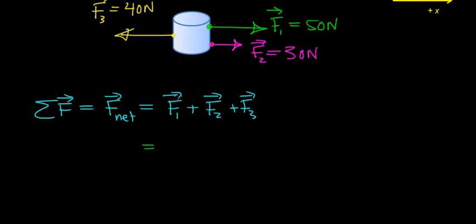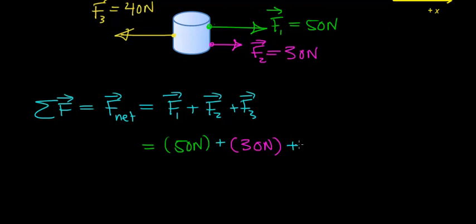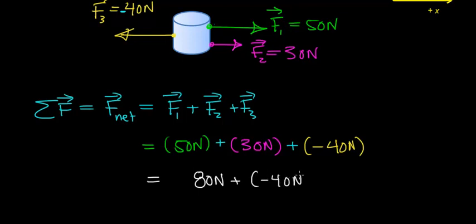We're going to add force 1, which has a magnitude of 50 Newtons in the positive x direction, plus F2 with a magnitude of 30 Newtons, plus F3 with a magnitude of 40 Newtons — but it's being pulled in the negative x direction, so we write negative 40 to indicate that. For clarity, we should include a negative sign to show it's in the negative x direction. Adding these up: 50 Newtons plus 30 Newtons equals 80 Newtons, then adding negative 40 Newtons gives 80 minus 40, for a net force of 40 Newtons.